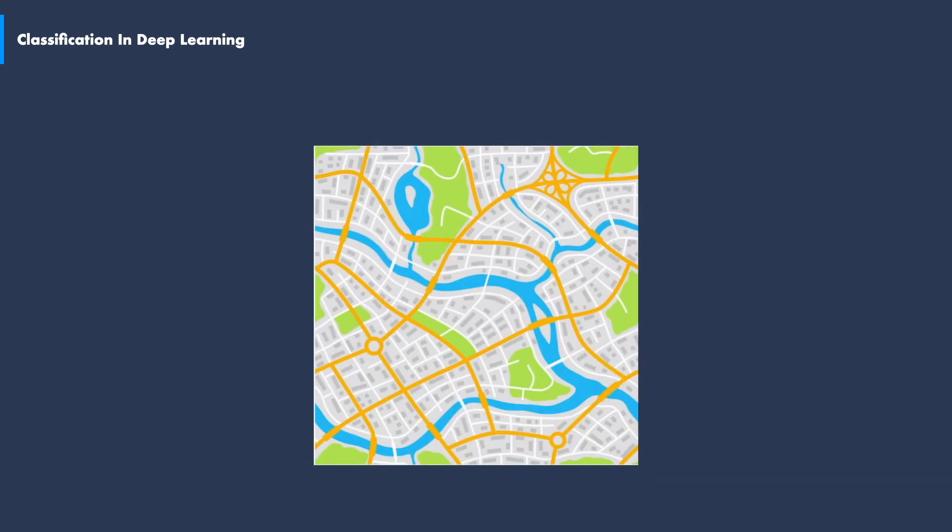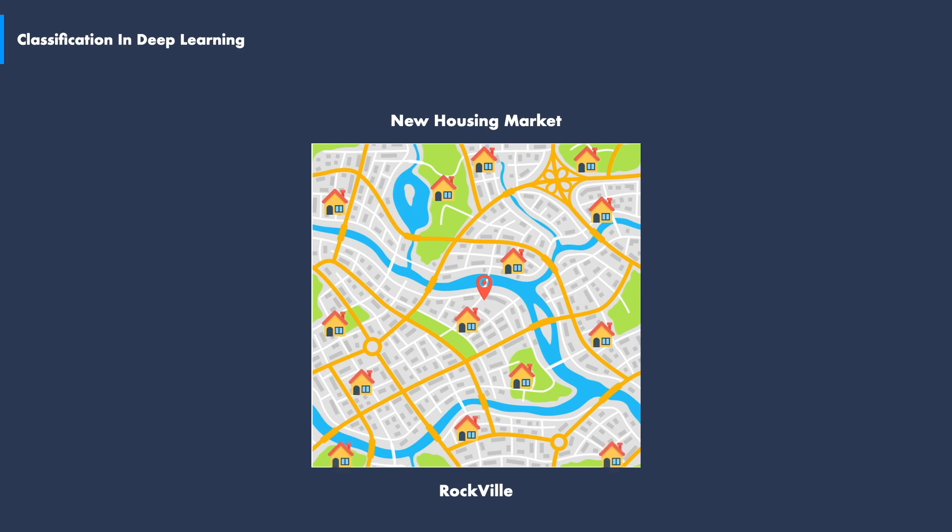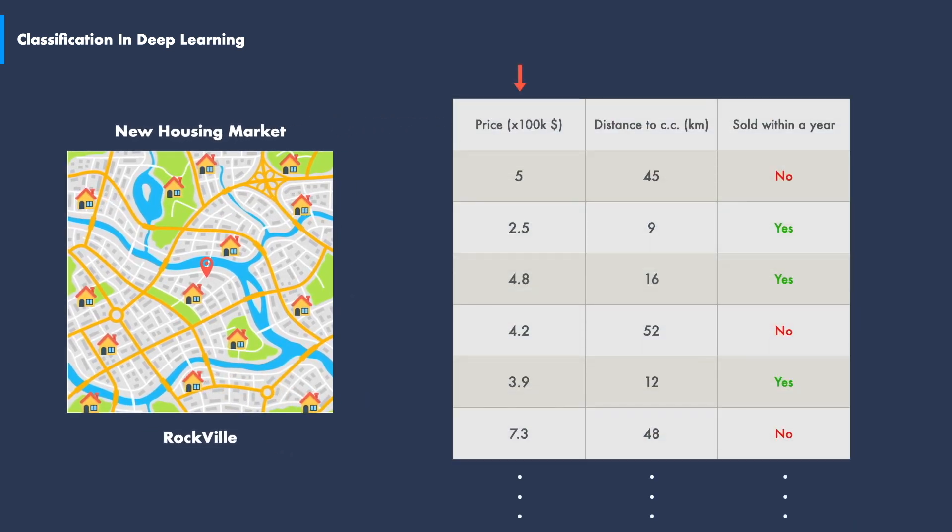The best way to learn about classification is to show an example that illustrates a certain problem. Let us say within the past year we have gathered data for newly built houses in a city called Rockville. The following table shows us information about the new built houses. The first column shows the price of the houses in multiples of 100k US dollars. The second column shows the location of the houses from the city center in kilometers. The third column tells us if a given house was sold or not within a year from its construction.